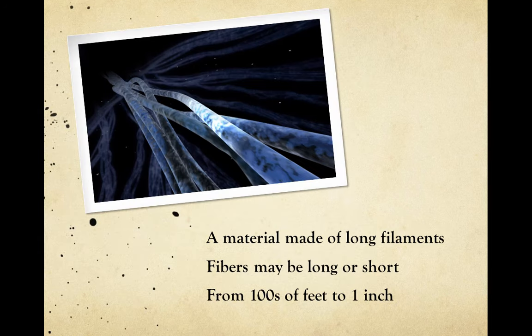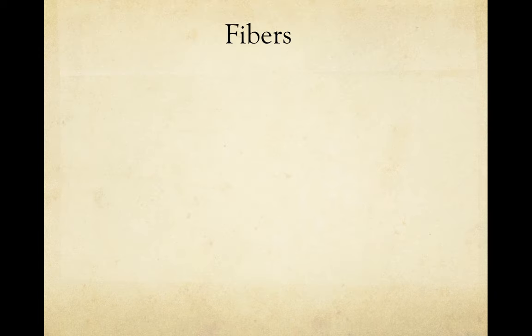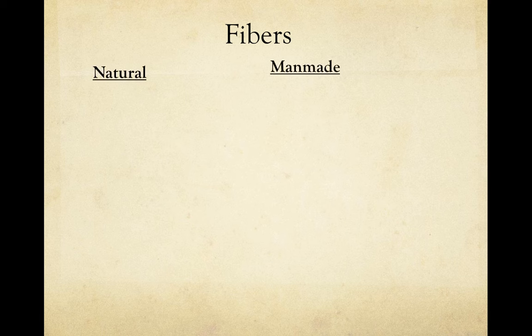By definition, a fiber is a material made up of long filaments, and fibers may be long or short, ranging from hundreds of feet to one inch, or even much, much shorter. Fibers are categorized into two main groups: natural and man-made, or synthetic.